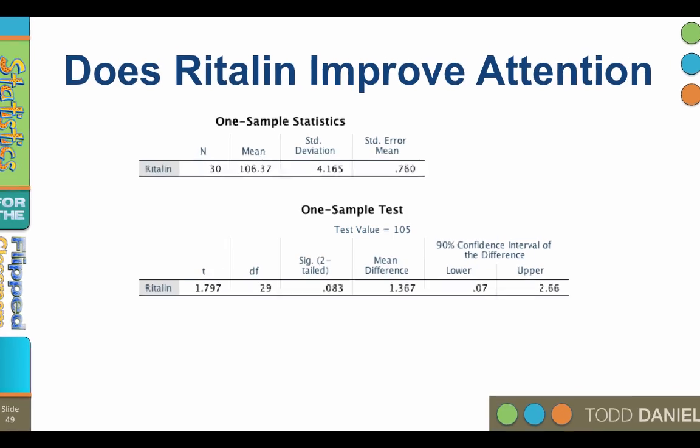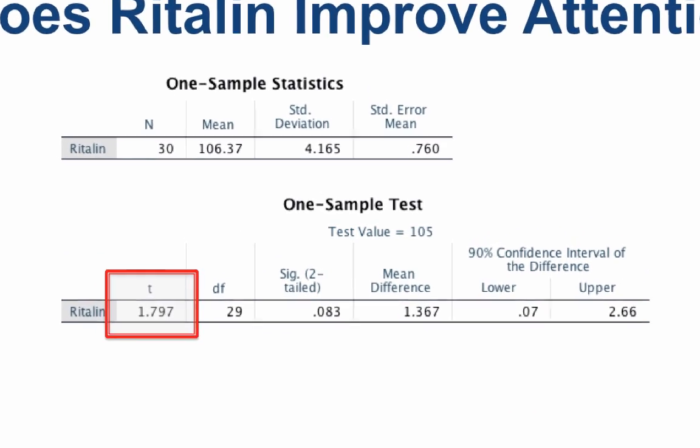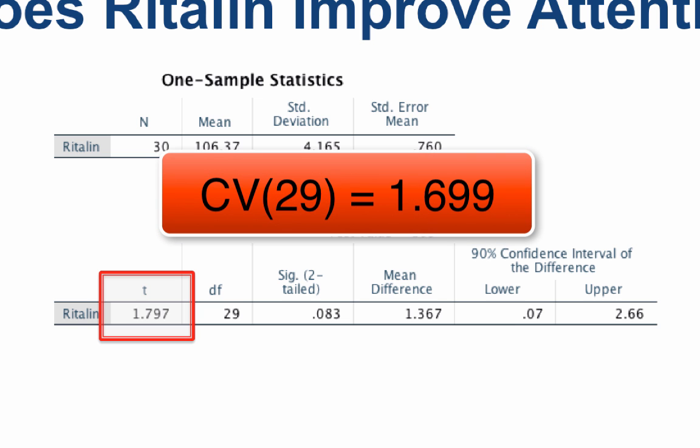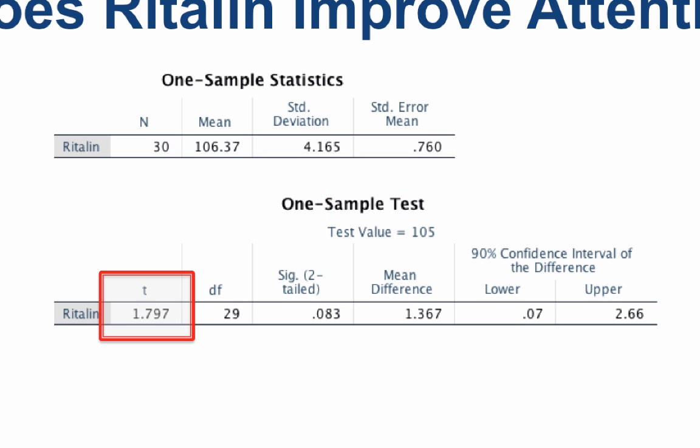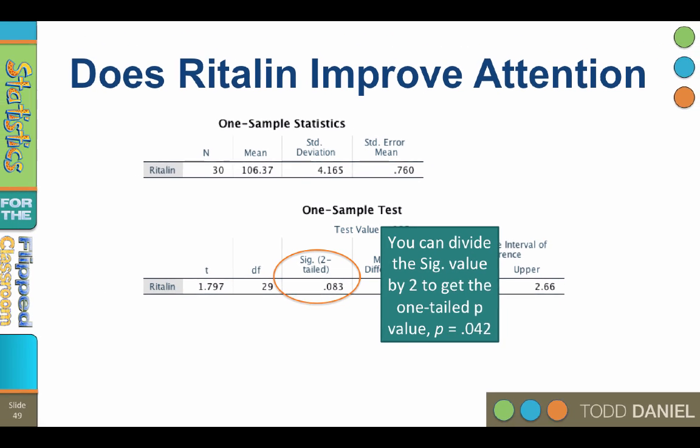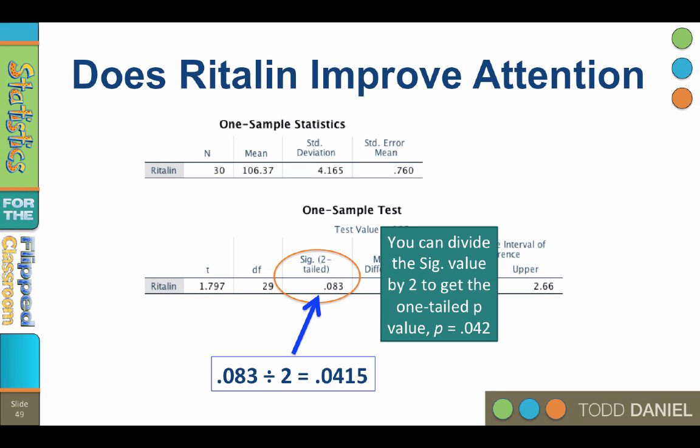Now we have already established that the t of 1.797 exceeds the critical value of positive 1.699. To get an actual p-value, we can start with this significance value of p equals 0.083 for a two-tailed test. We can divide the significance value in half to get the one-tailed test probability value. So divide 0.083 by 2 and you get p equals 0.0415. That is the actual p-value for the one-tailed test.